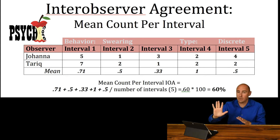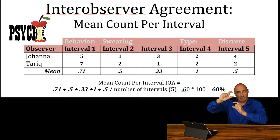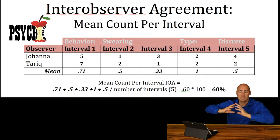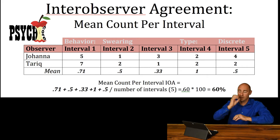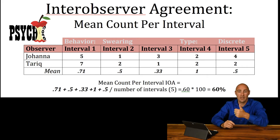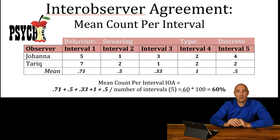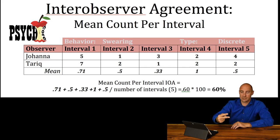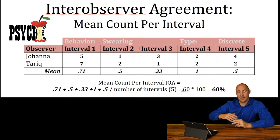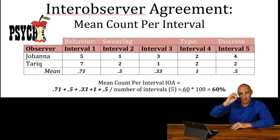I'm only going to work with three intervals here. First interval: both observers saw the exact same thing — three and three. Divide lowest by highest, equals 100%. Second interval: one person saw nothing, the other person saw one. We divide zero by one, you end up with zero percent. Third interval: this person saw the behavior twice, and this person saw the behavior twice — divide that out, a hundred percent. So: first interval 100%, second interval 0%, third interval 100%.